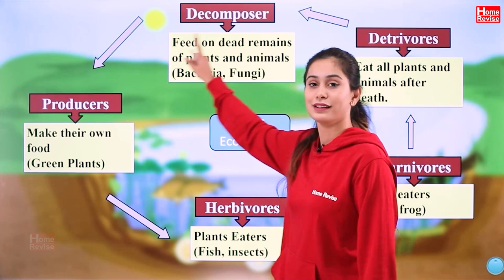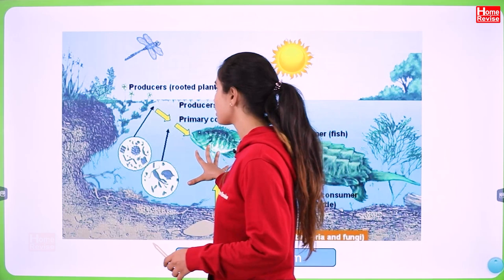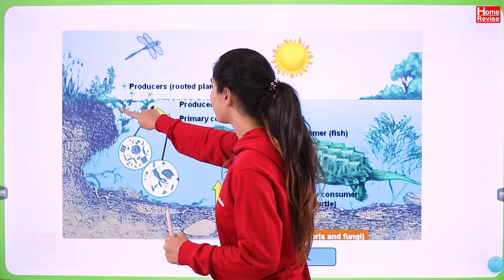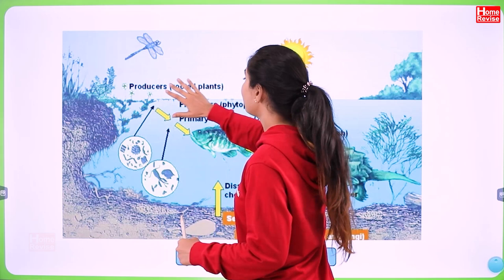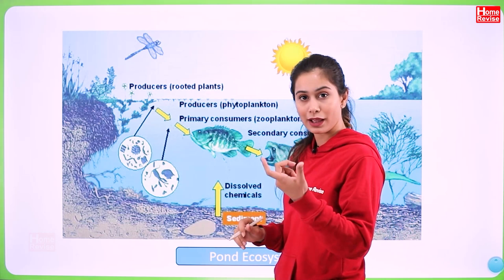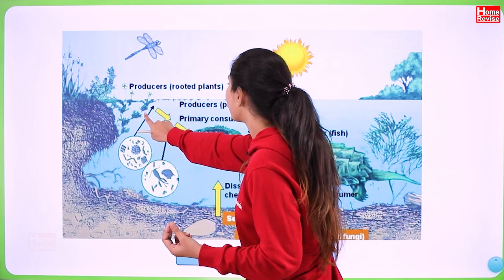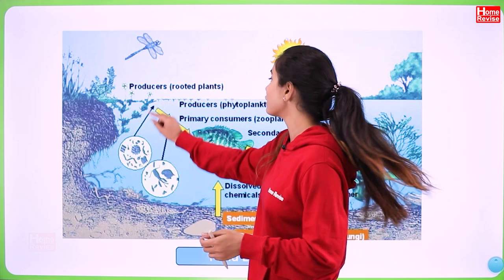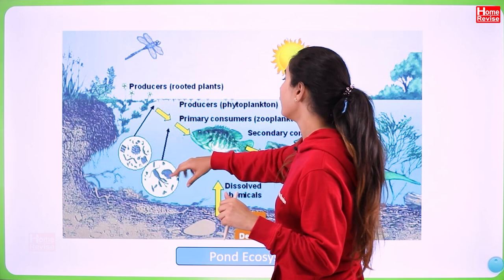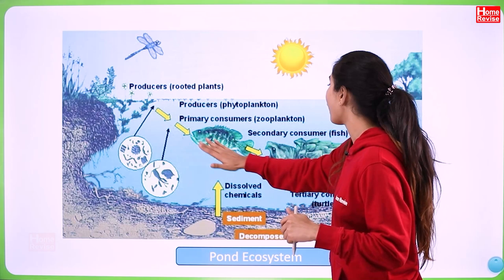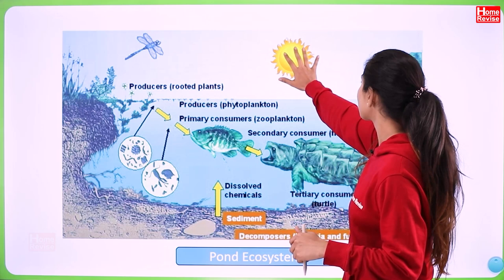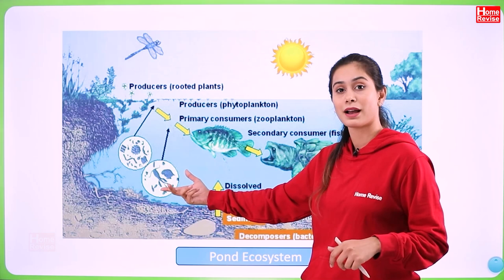So we have taken an example of a pond ecosystem — this is a little illustration. If you can see here, there are rooted plants — these are the producers. The producers include phytoplankton, which are microscopic plant-like organisms. Then there are zooplanktons, which eat the phytoplanktons. Then there are fishes, and then secondary consumers like turtles. Plus sunlight, water, and soil — these are all part of the ecosystem.